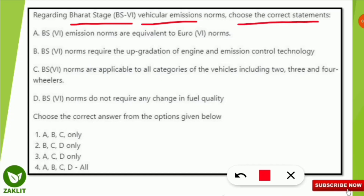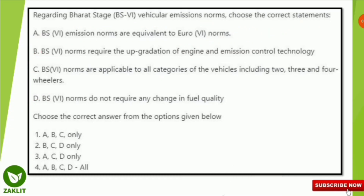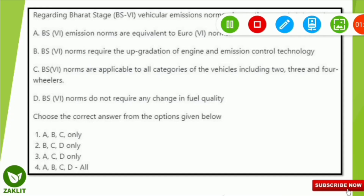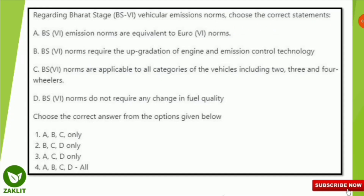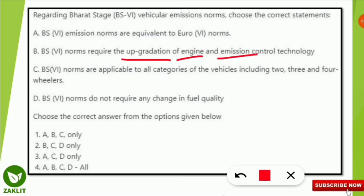The question asks to choose correct statements regarding Bharat Stage 6 emissions. Statement 1: BS6 emission norms are equivalent to Euro 6 norms — this is correct. Statement 2: BS6 norms require the upgradation of engine and emission control technology — this is also correct, meaning vehicles must upgrade engines to control emissions. Statement 3: BS6 norms are applicable to all categories of vehicles including 2, 3, and 4 wheelers — this is also correct.